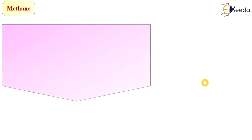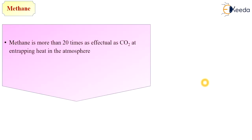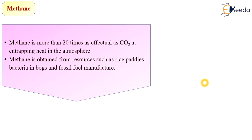The next greenhouse gas is methane. Methane is more than 20 times as effectual as carbon dioxide at entrapping heat in the atmosphere. So although carbon dioxide is present in greater quantities, the effect of methane is 20 times more potent. Methane is obtained from resources such as rice paddies, bacterial decomposition, and fossil fuel burning.